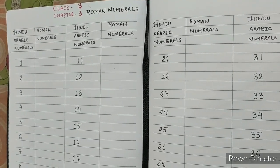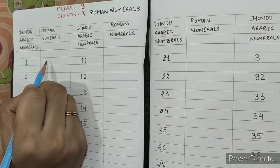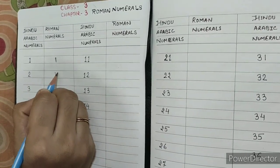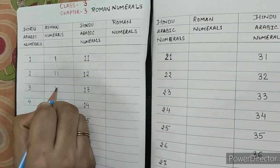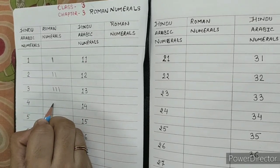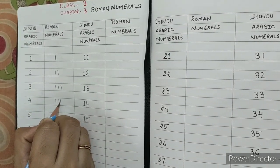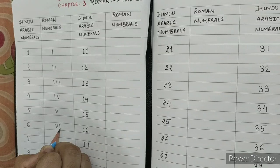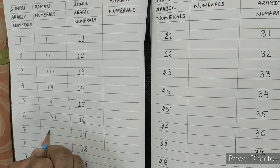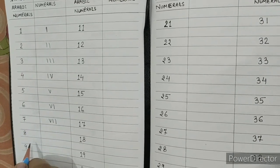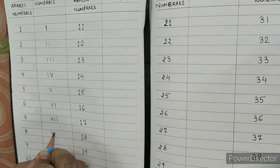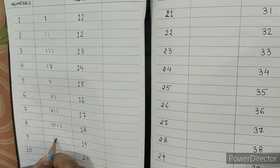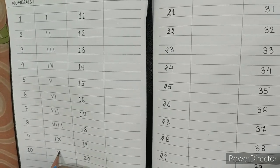Let's go through Roman numerals from 1 to 10. 1 is written as I. 2 is I plus I. 3 is I plus I plus I. 4 is I plus V. 5 is V. 6 is V plus I. 7 is V plus I plus I. 8 is V plus I plus I plus I. 9 is I then X. 10 is X.